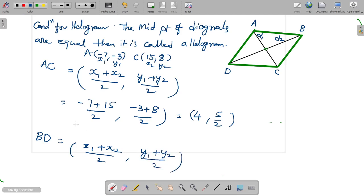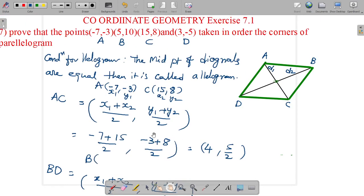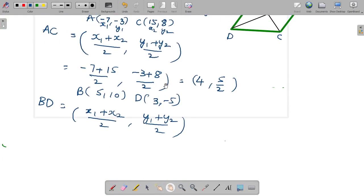B coordinates are (5,10), D coordinates are (3,-5). This is x₁, y₁, this is x₂, y₂.